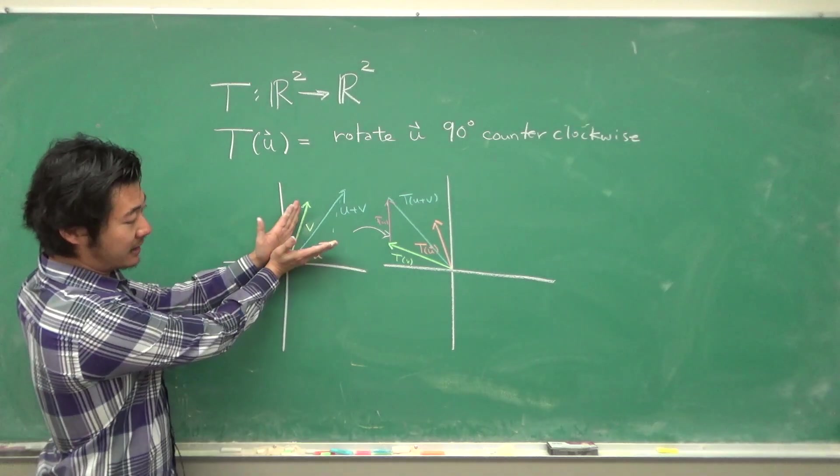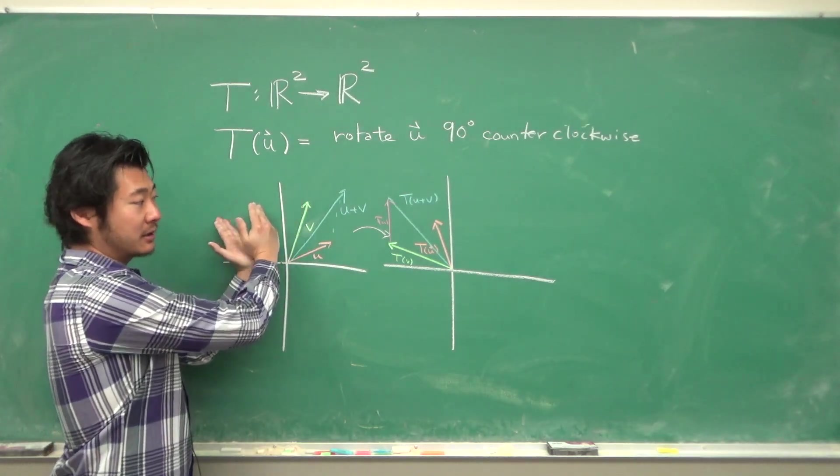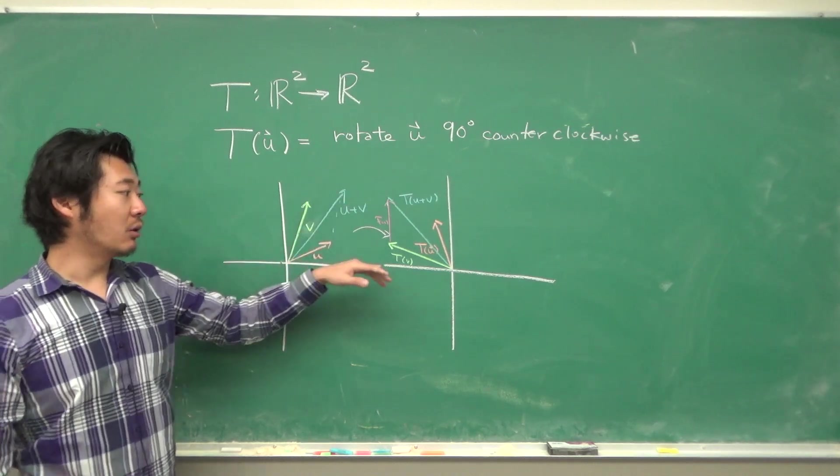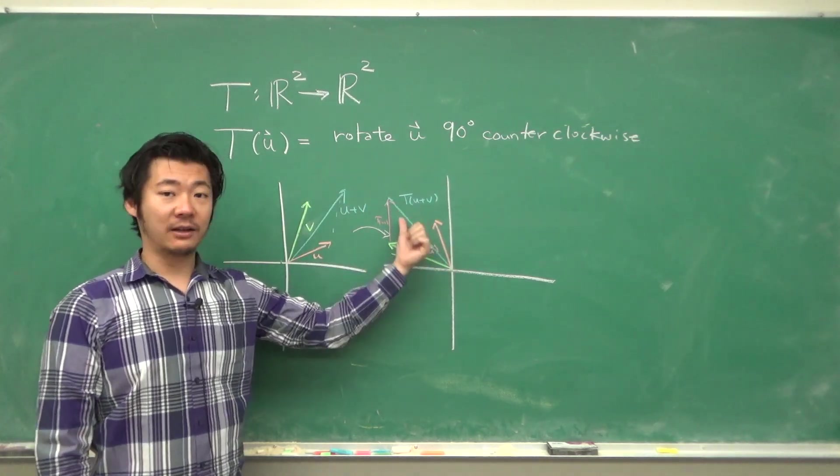So when we rotate u plus v 90 degrees, then it's the same as rotating the u plus v vector or adding the two already rotated vectors.